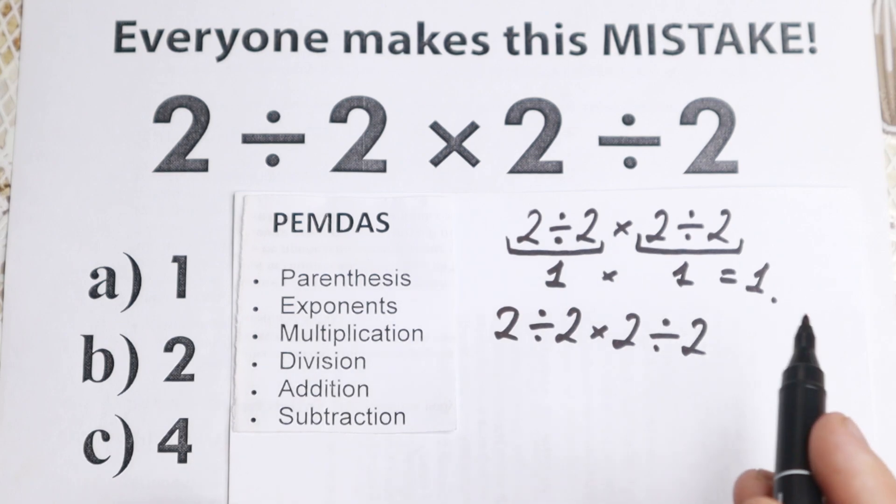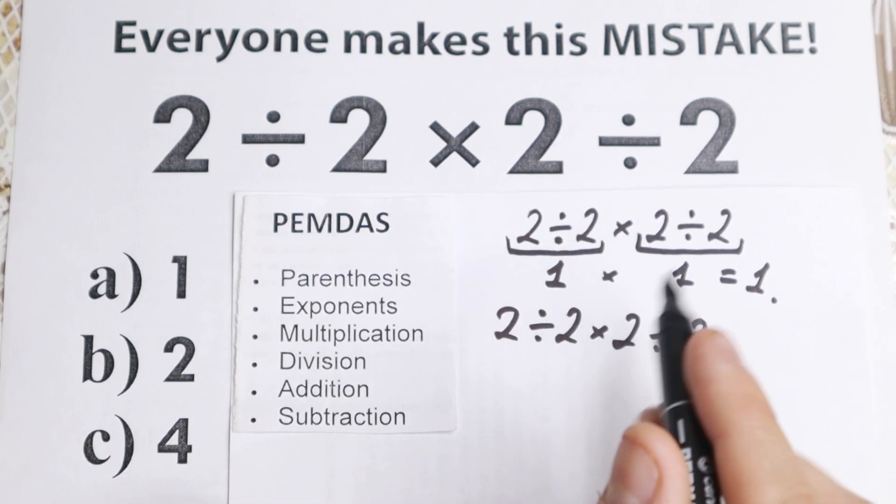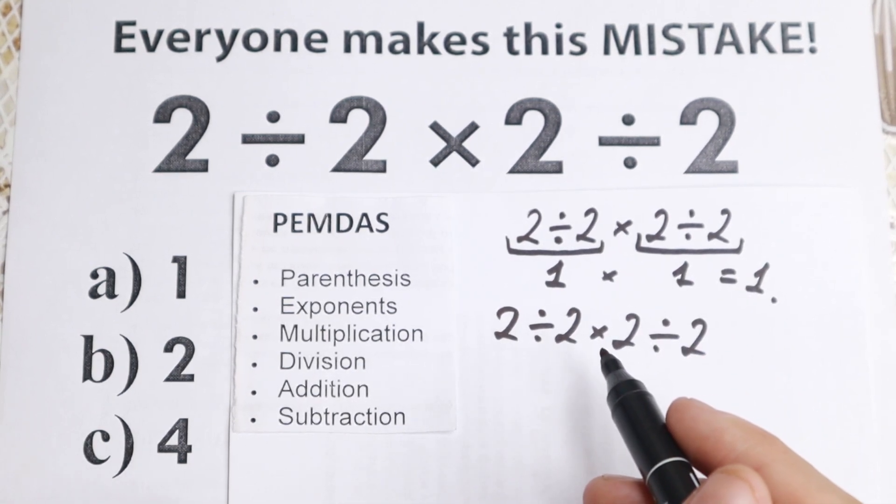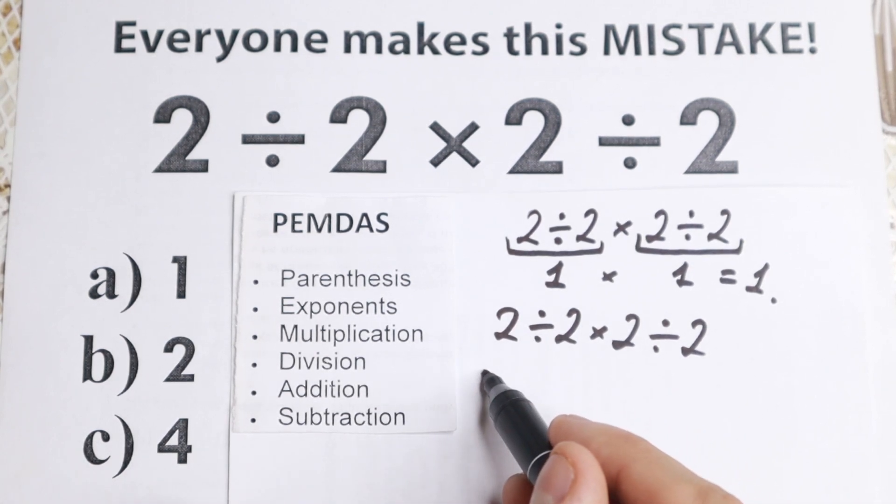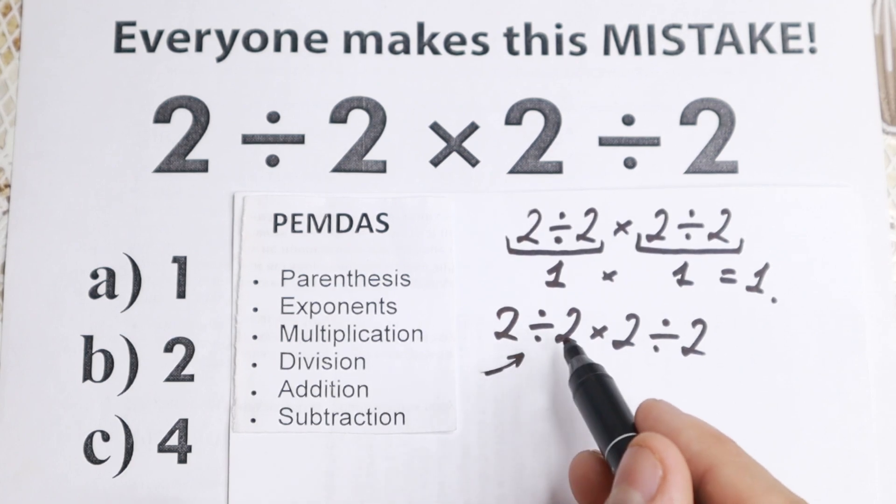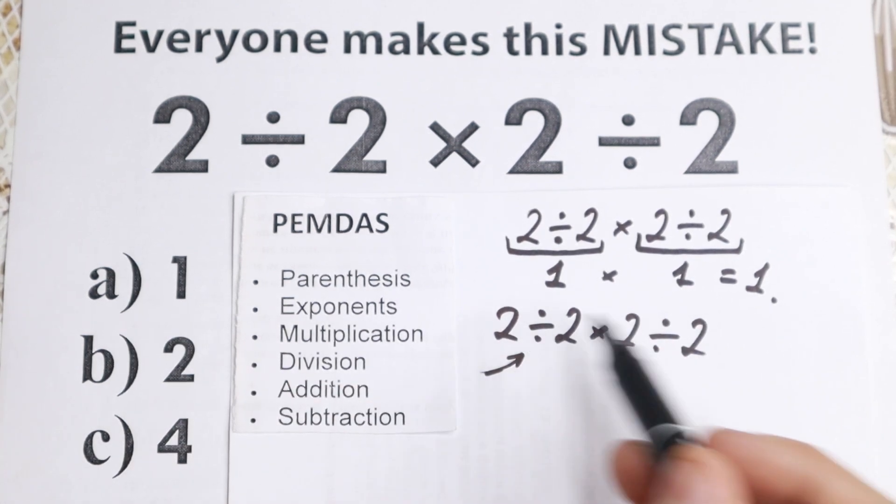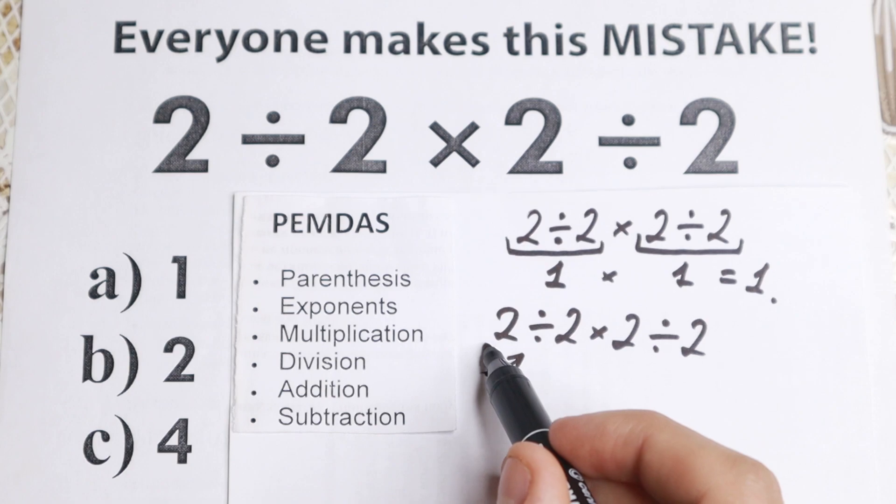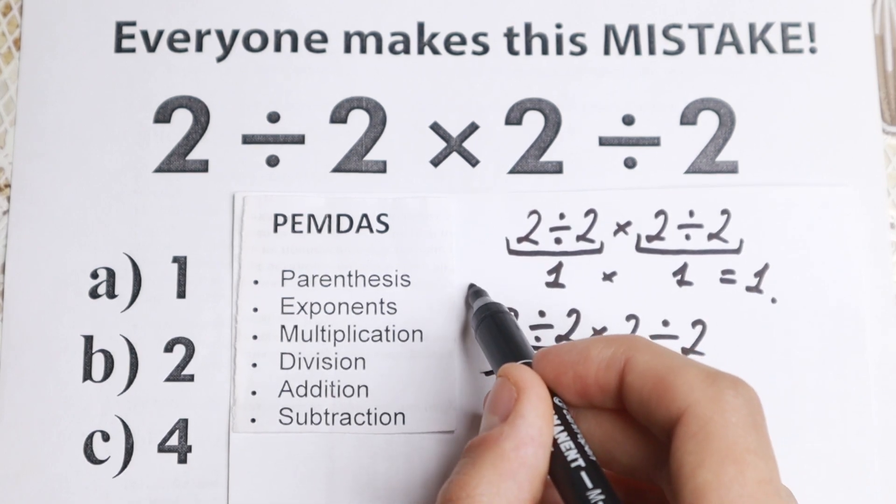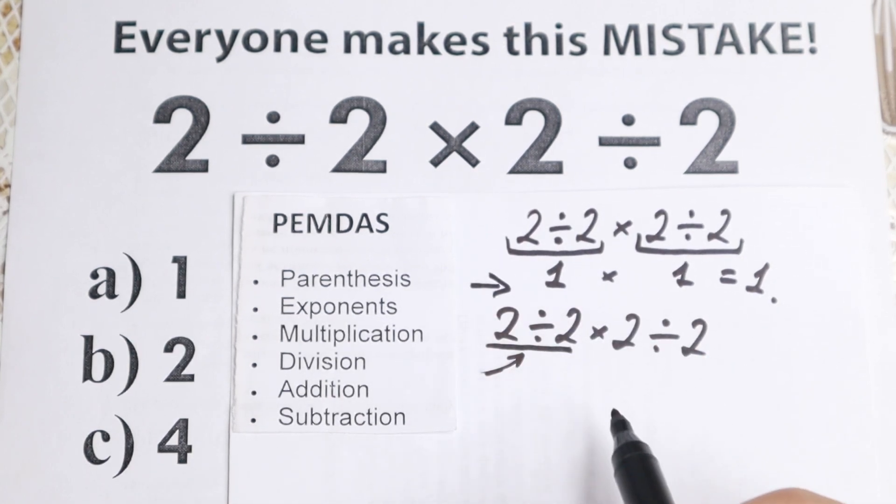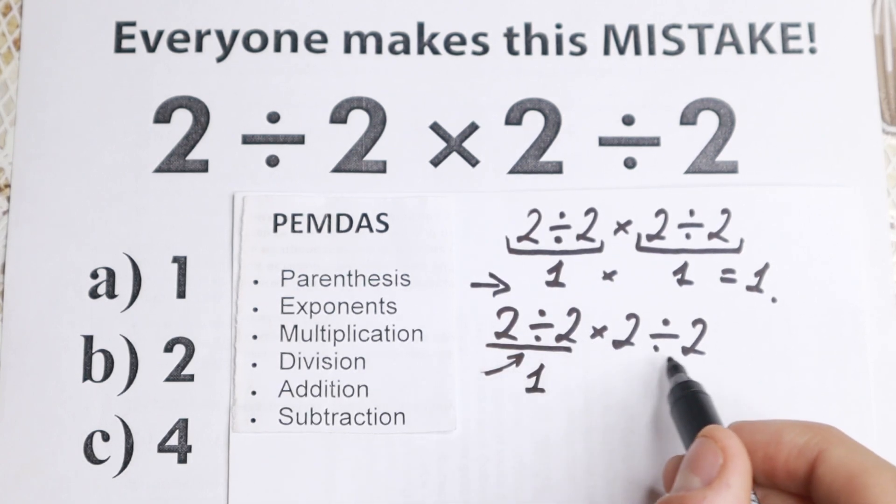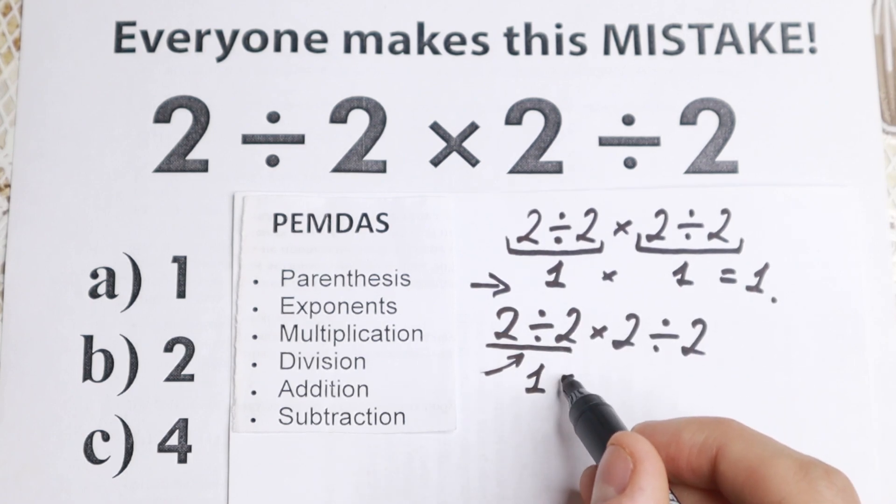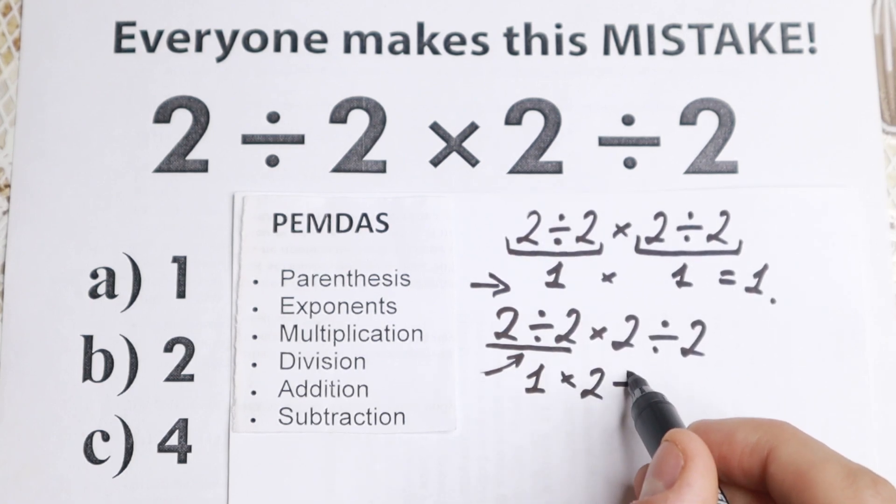And now we need to scan what is the first sign from left to right? The first sign is division, doesn't matter, it will be like multiplication, division, so in our case division. So let's start from this division. From left to right, we go from left to right, and let's start with this division. So 2 divided by 2 equal to 1. And let's rewrite this expression that we have right now. So 1 times 2 divided by 2.